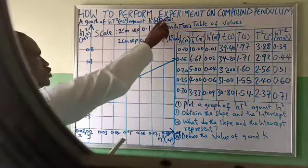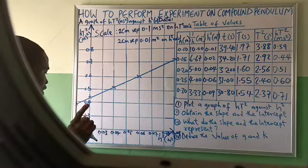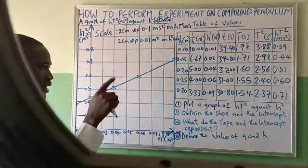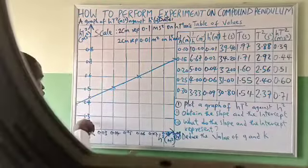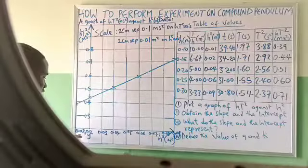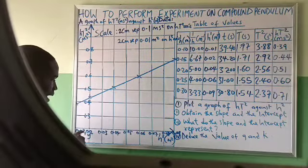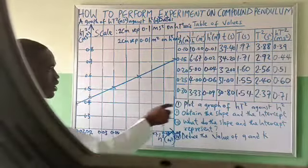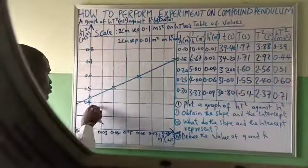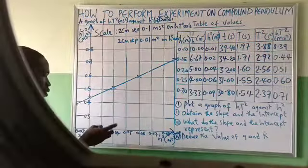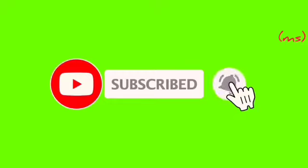To summarize the key points: write your date, write your title, note your scale, label the axes, and choose an appropriate scale. If starting from 0.0, the scale is the highest value divided by the number of spaces. If not starting from 0.0 — as we did here, starting from 0.02 — it is the highest minus the starting value divided by the number of boxes. Similarly for the Y axis: 0.71 minus 0.2, divided by 8 spaces. Then run your graph and draw your line of best fit. Thank you.